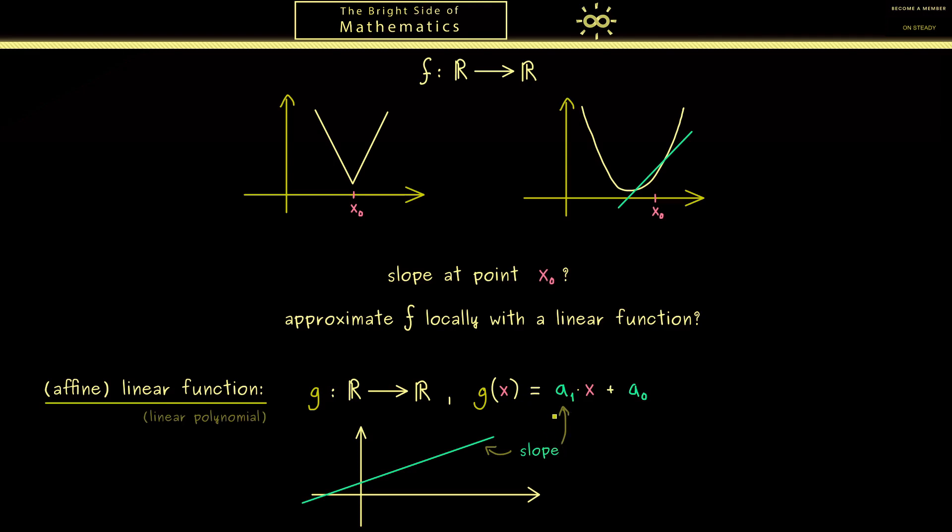Now of course this is the important ingredient we need for the approximation of a function f. By changing the constant a0 we would just shift the function up and down. For this reason we don't have a problem changing the expression a little bit when we want to fix a point x0 on the x-axis.